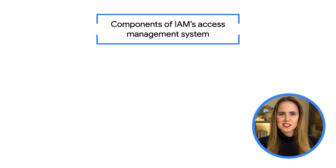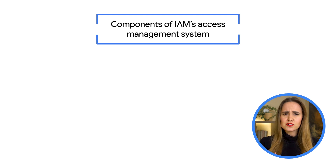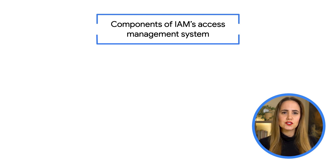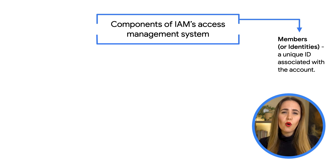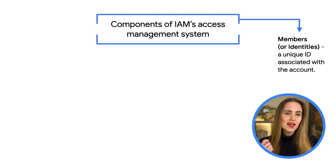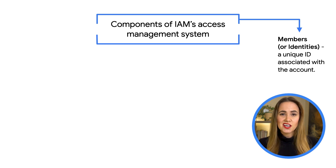Cloud IAM's access management system breaks down into a few basic parts: members, resources, permissions, roles, policies, and groups. Members, or identities, can be a Google account for end users, a service account used to manage apps and virtual machines, a Google Group, or a Google Workspace Cloud Identity domain able to access a resource. The member's identity is usually the associated email address, service account, group, or domain name.